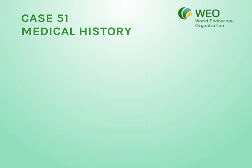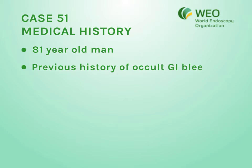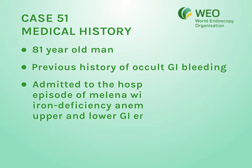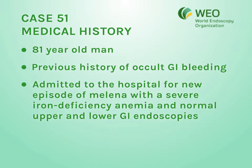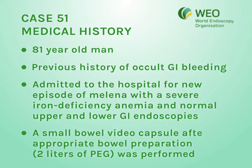This clinical case deals with an 81-year-old man who has a previous history of occult GI bleeding. He was admitted to the hospital for a new episode of melena with a severe iron deficiency anemia and normal upper and lower GI endoscopies. A small bowel video capsule was performed after appropriate bowel preparation with 2 litres of polyethylene glycol.